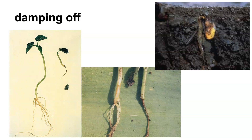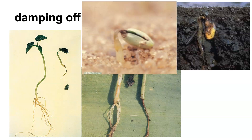Here is another picture of damping off. You can see how this seed was never able to get out of the soil — it transmitted pathogen into that area, but the plant never grew. This is another picture of damping off: you can see how the pathogen affected the collar region right at the base of the seed, killing off the plant before it ever had a chance to get out of the ground.